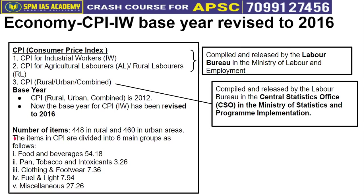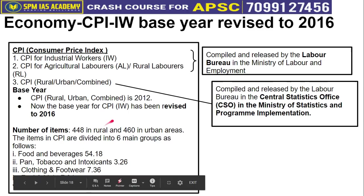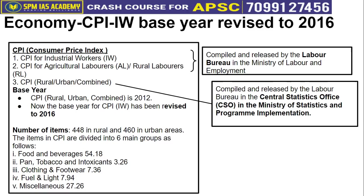It is also commonly asked in exams which items are included in the Consumer Price Index for calculating inflation. Not all items are included — a list of important items is made and their price changes are measured. CPI includes: food and beverages, pan, tobacco and intoxicants, clothing and footwear, fuel and light, and miscellaneous. Under miscellaneous, some services are also included — such as education and health services. So importantly, CPI inflation incorporates both goods and services.